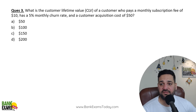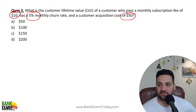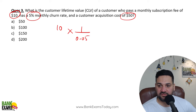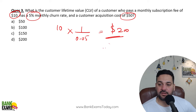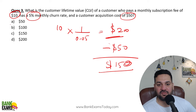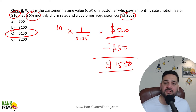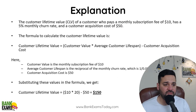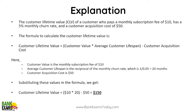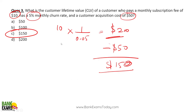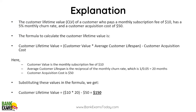Question number three: what is the customer lifetime value of a customer who pays a monthly subscription fee of $10, with a churn rate of 5% and a customer acquisition cost of $50? Monthly subscription $10 ÷ churn rate 0.05 = $200. But you are spending $50 to acquire that customer, so $200 − $50 = $150 is the customer lifetime value — acquisition cost bhi toh minus karni padhegi na. It's an MCQ paper, so just do this quick calculation — you are going to get the same marks.